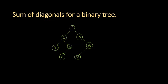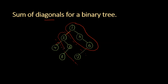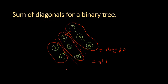First let us define what is a diagonal for a binary tree. Imagine lines of slope drawn such that they cut through the left branches of this tree. As you can see, the tree is now divided into 3 partitions. The first partition has nodes 1, 3, 6; the second partition has 2, 5, 7; and the last partition has 4 and 8. We call these diagonal 0, diagonal 1, and diagonal 2.